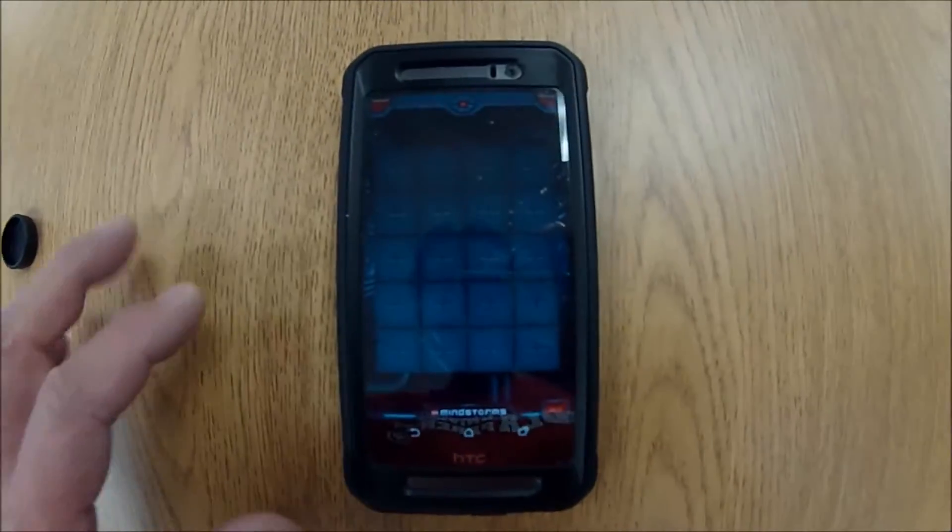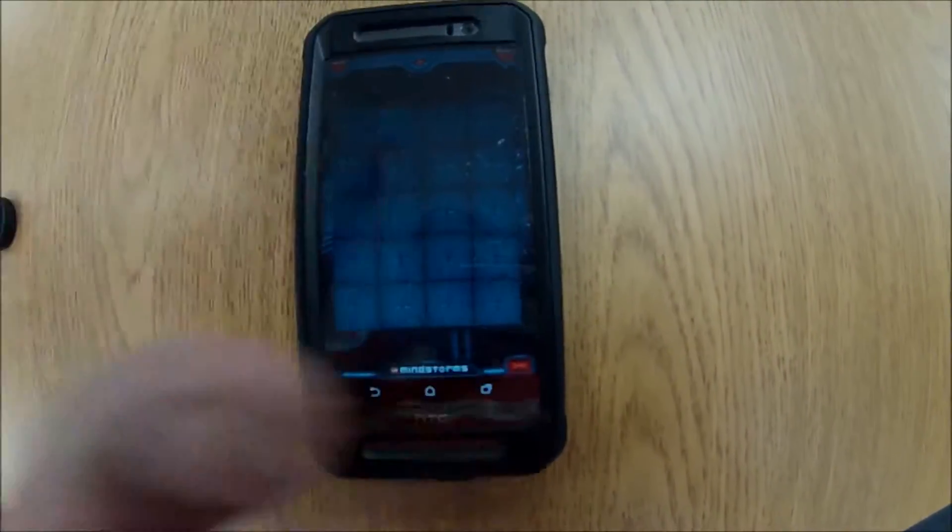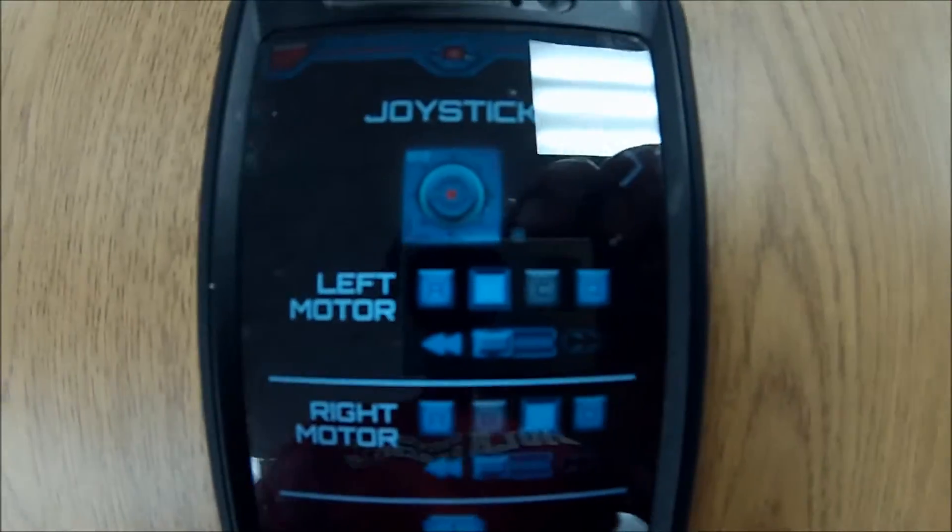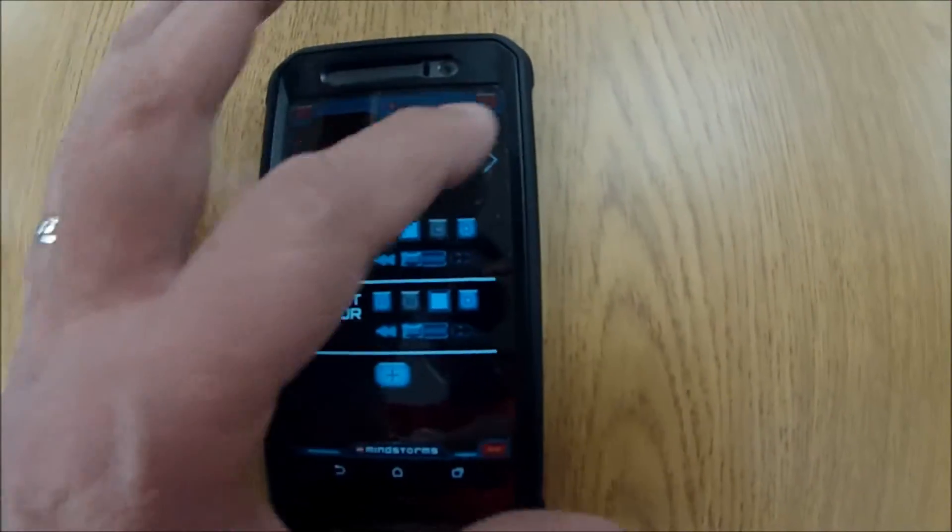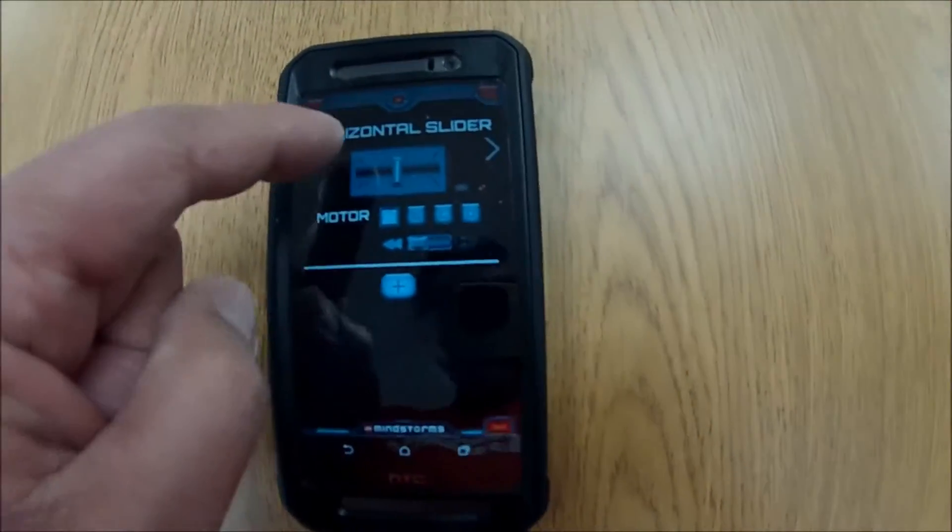The first thing to do is pick one. It doesn't really matter, just pick one. They give you the joystick option. We're going to go to the right here and pick a horizontal slider.